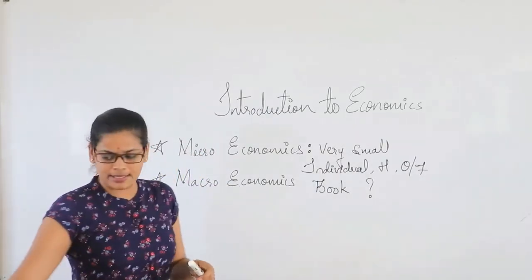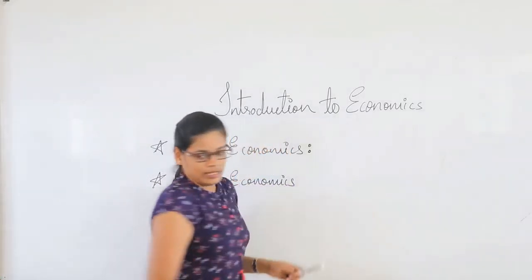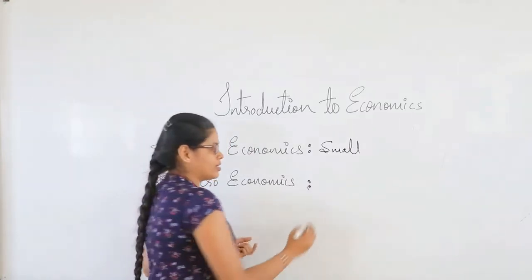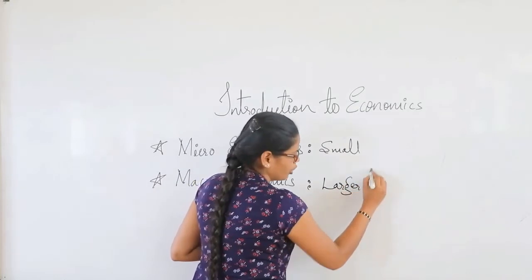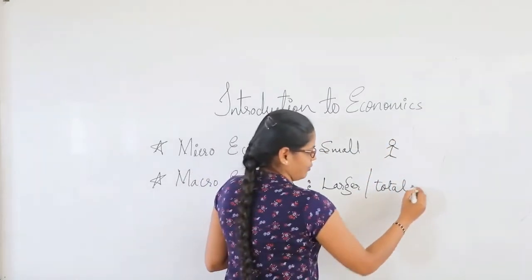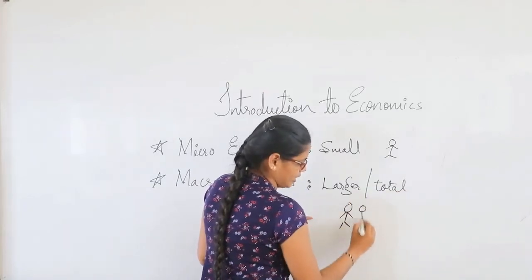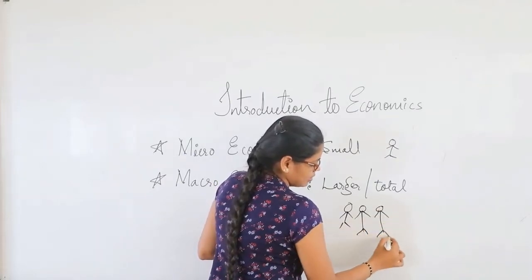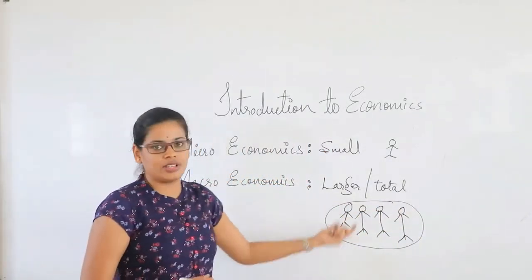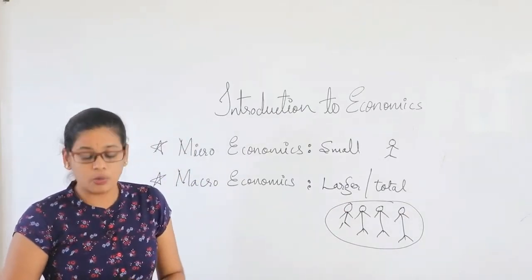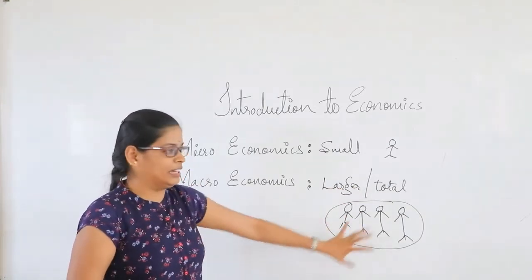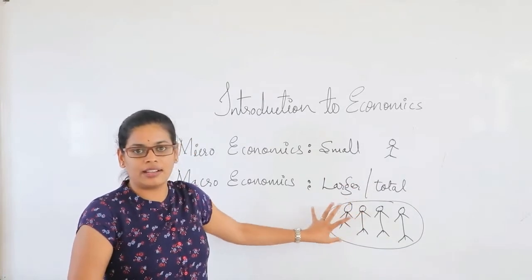Next, we will discuss macroeconomics. Microeconomics deals with smaller components, whereas macroeconomics is a larger component — or we can say total. In microeconomics we study the individual, whereas in macroeconomics we are not studying a single person. We are discussing the entire community, which is a larger community. The word macro means total or large — this is not just one individual or one single person. We are talking about the entire community or the whole country. That comes under macroeconomics.